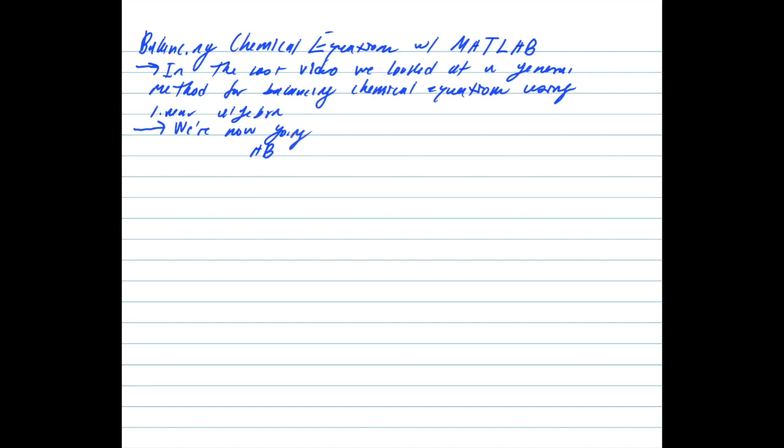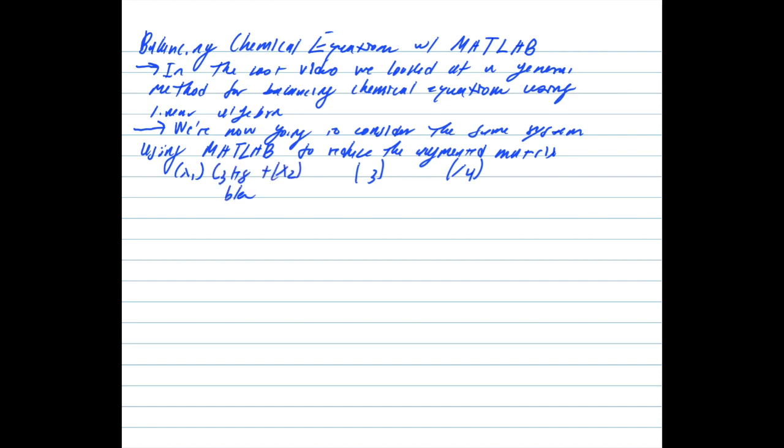So again, to recap from the last video, we have the combustion of propane. So C3H8, and the C is for carbon, and we have three carbon atoms in the molecule, and H is for hydrogen, and we have eight hydrogens in the molecule. And that is going to be combusting in air, and we have O2 for molecular oxygen. So the O is for oxygen, and the 2 means that there are two oxygen atoms in the molecule. And then likewise, that goes for CO2 and H2O, which are the products of the reaction.